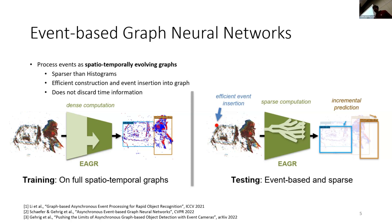This has two benefits. First, it maintains the sparsity in the events — when there are no events, there's no graph and no computation. Second, when there are new events, we can efficiently insert them into the graph. There's a very fast CUDA implementation that does this.